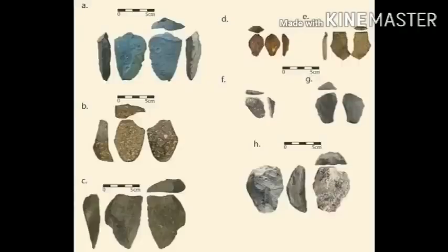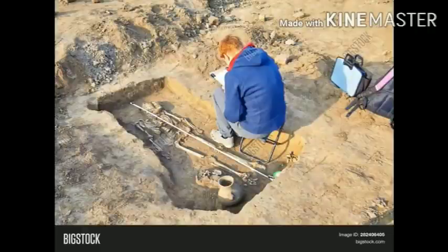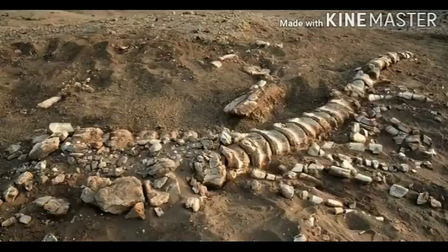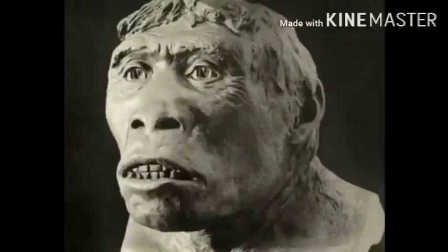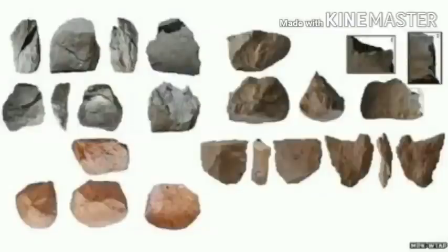Prehistoric cultures: the prehistory period does not have evidence of writing — that is why it is called prehistory. Fossil bones are classified as various species such as Homo Habilis, Homo Erectus and Neanderthalensis. Based on the lithic tools, cultures are assigned names such as earliest lithic assemblages, old stone technology, lower, middle and upper Paleolithic and Mesolithic cultures. Lithic means stone.